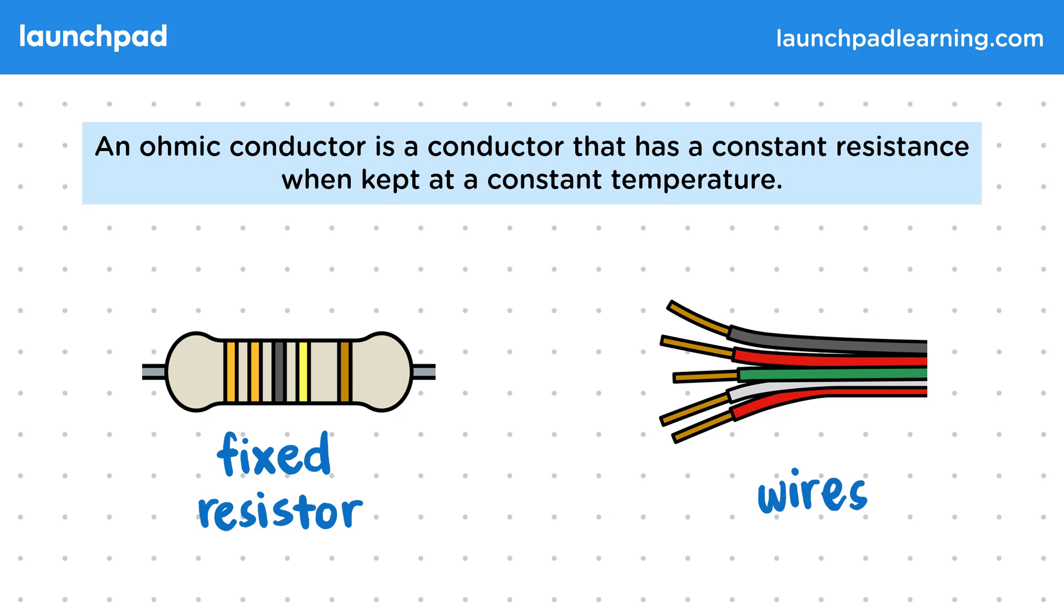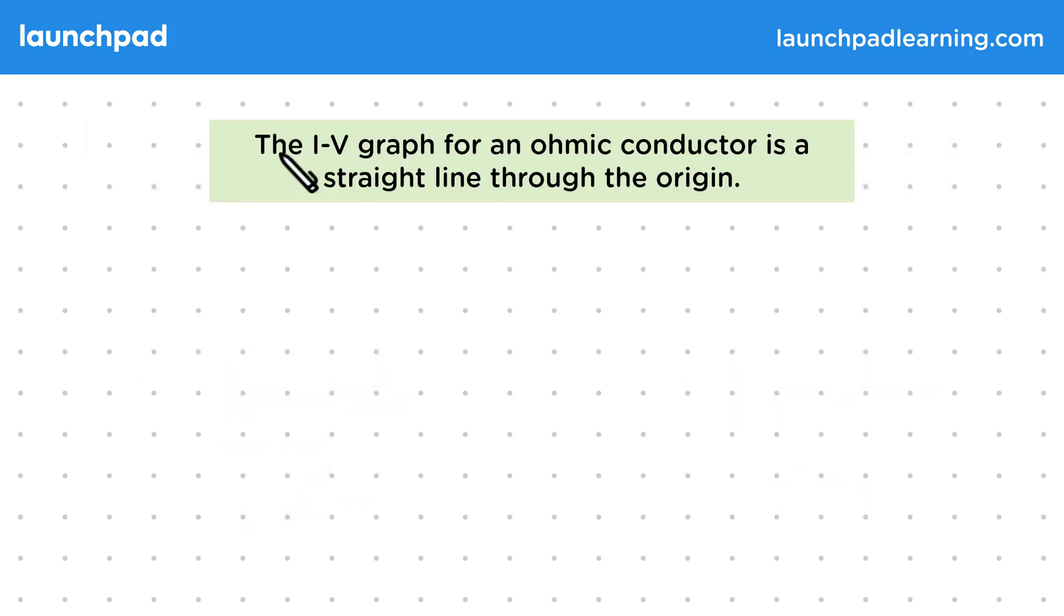So what would the relation be between current and potential difference for conductors like these ones? The IV graph for an ohmic conductor is a straight line through the origin. Remember that IV graphs are used to show the relation between currents and potential differences in components. The horizontal axis is the potential difference across the component, and the vertical axis is the current we'd get for that potential difference.